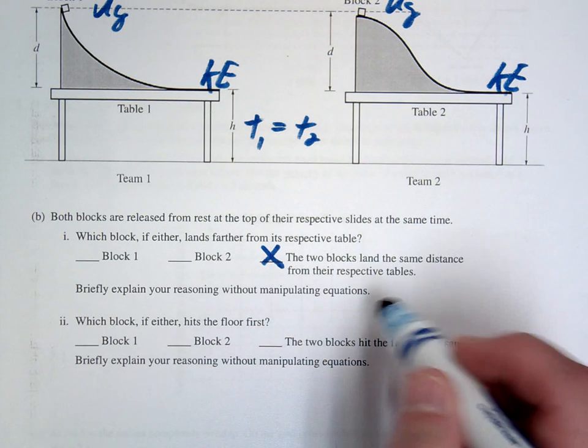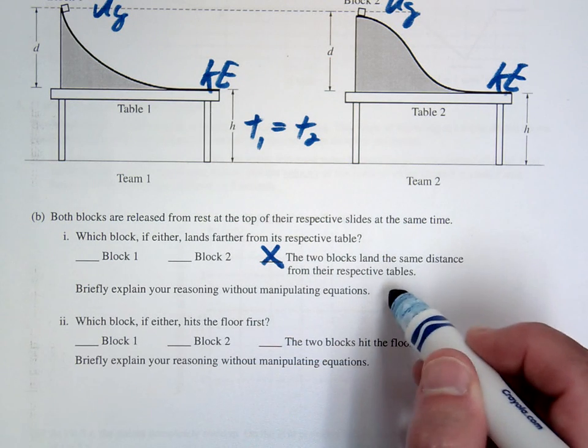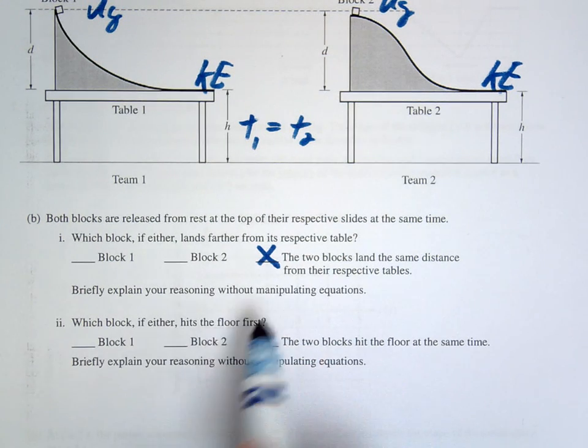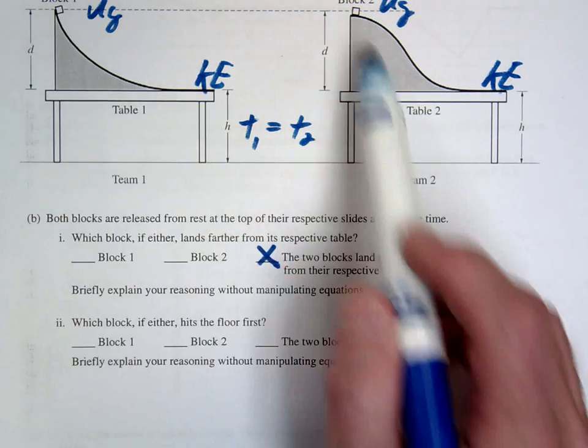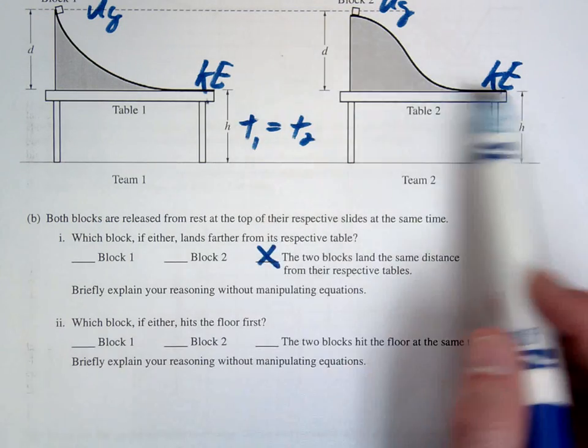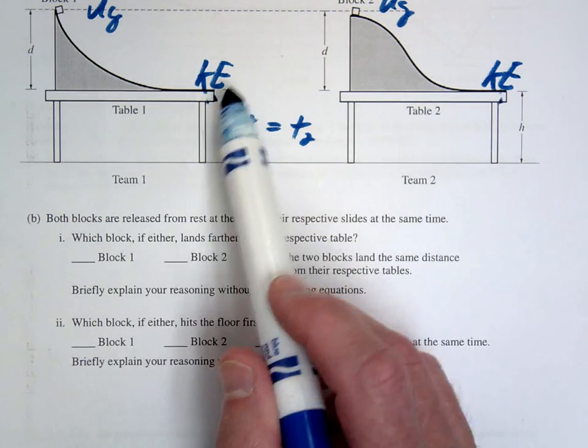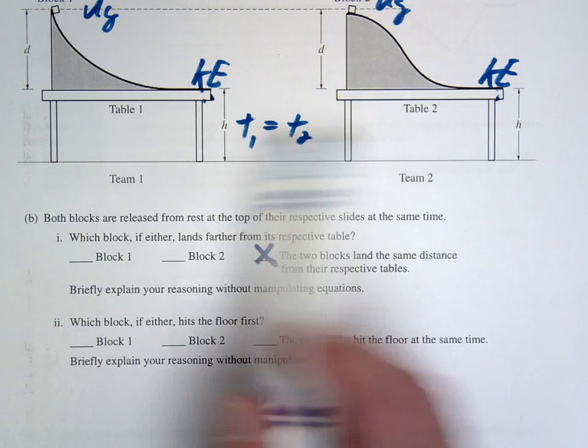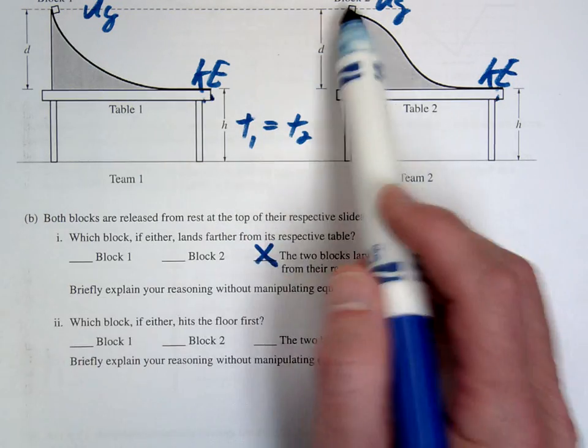Again, you're going to explain with words what I was just saying verbally. Which block is going to hit the floor first? In this case you've got to look at the shapes a little bit. We know the speed is going to be the same at the bottom, and the time in the air is going to be the same. So the question is, what's true about the time on the ramp?